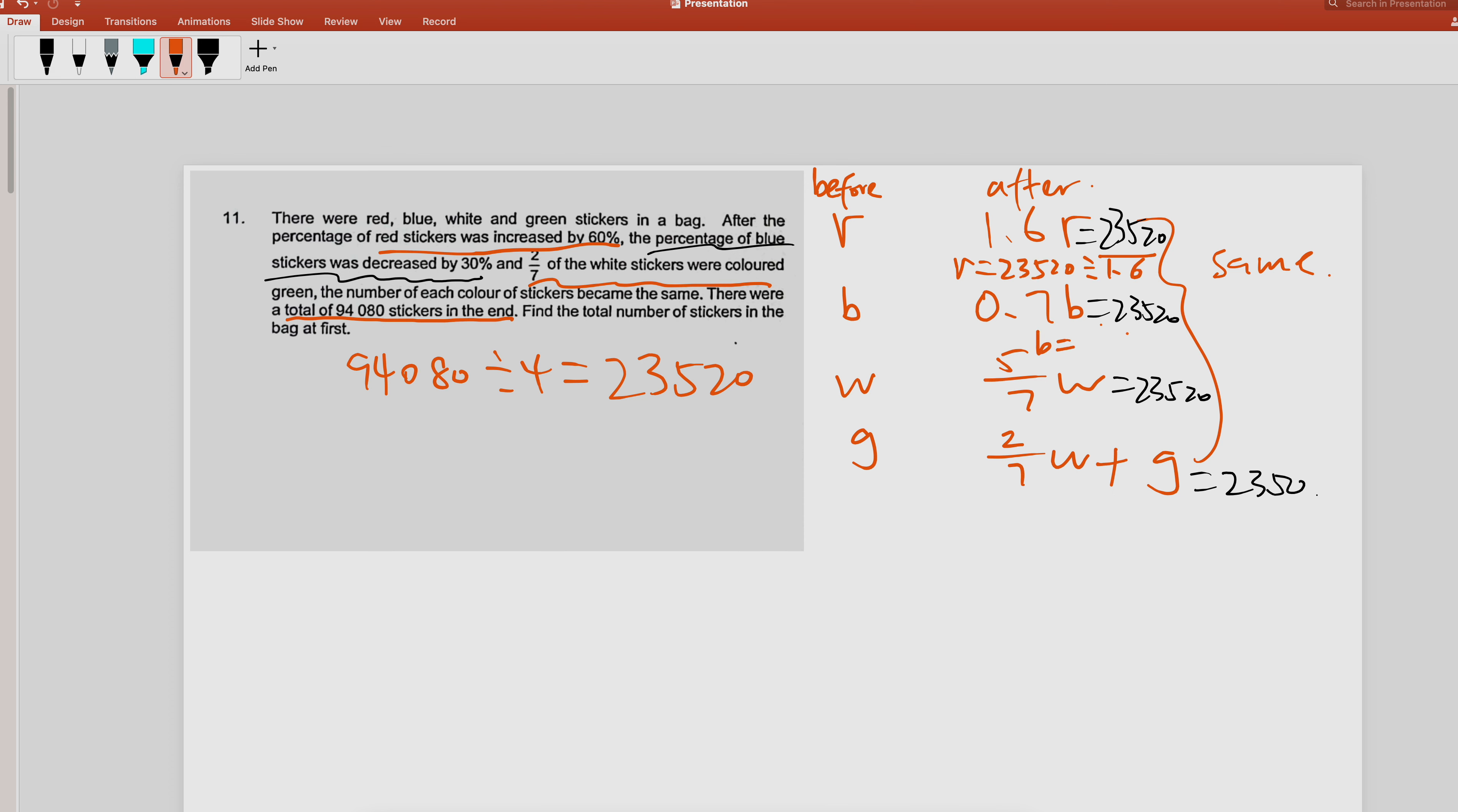How do you get blue? It's 2352 divided by 0.7. Then how do you get white? It's 2352 divided by 5/7. So once you get white from here, you can find out green. You just take 2352 minus the 2/7 of white.